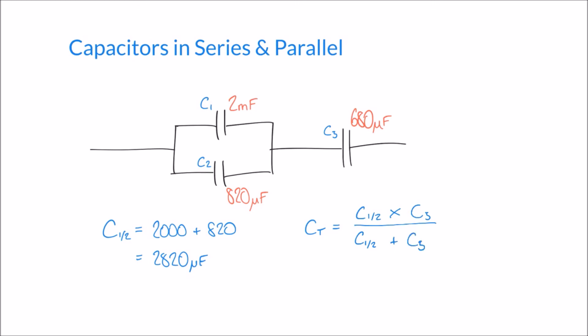And so we know some of the values here, we can say that that's the same as saying 2,820 times 680 over 2,820 plus 680. And that gives me an answer of 547.89 microfarads.